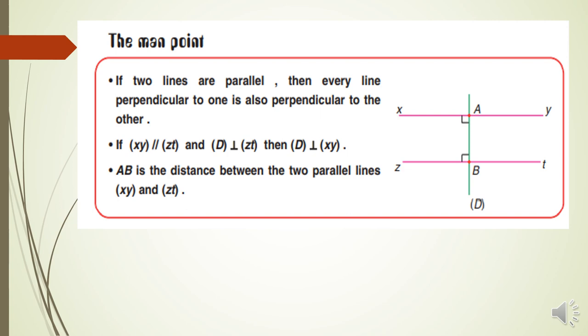Then, the main point is, if two lines are parallel, then every line perpendicular to one is also perpendicular to the other. If (xy) is parallel to (zt) and (D) is perpendicular to (zt), then (D) is perpendicular to (xy). So parallel and perpendicular to the same line give us two perpendicular lines.